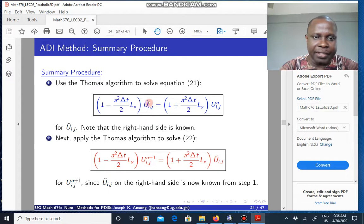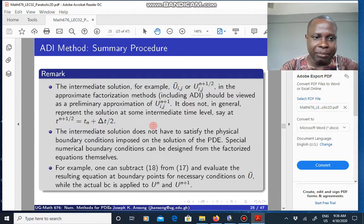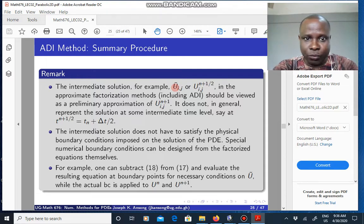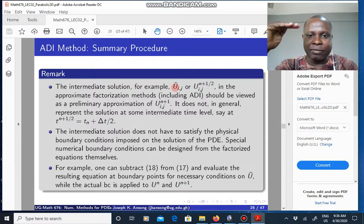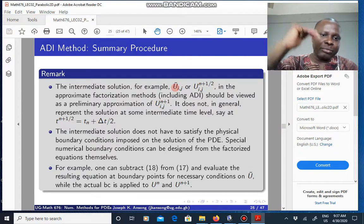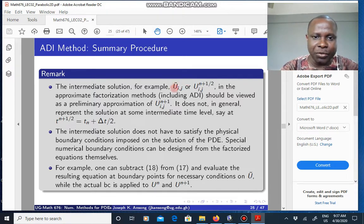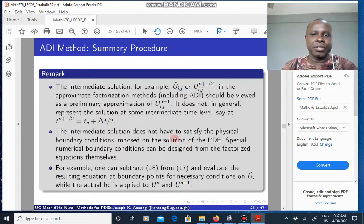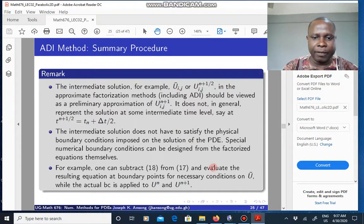Moreover, this U tilde is actually not a solution at an intermediate time level. When you get U tilde, it does not necessarily represent a solution at an intermediate time level. For instance, if you are solving from time level 1 to time level 2, U tilde does not mean that you have a solution at time level 1.5. It is just a preliminary approximation, which is used to help you to get to the final solution. So you have to be careful how you interpret U tilde. There's an example that we'll do in our next lecture on how to get the boundary conditions for U tilde when solving this equation using the ADI method.